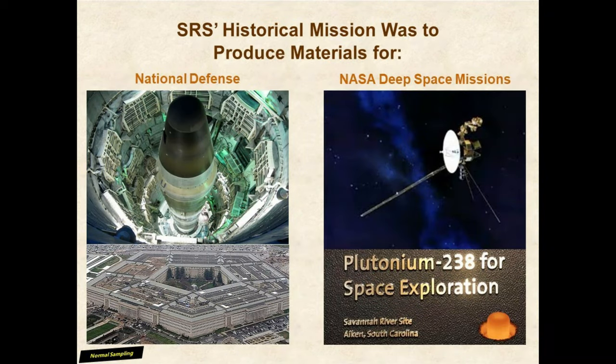SRS had two main missions. The first was to support national defense efforts specifically for weapons — locals used to call this the bomb plant. The second mission is to supply specialized isotopes for NASA's deep space equipment, including the production of plutonium-238, which helps to keep satellites both warm and powered.